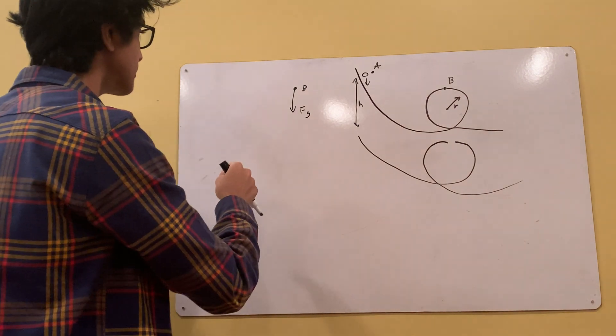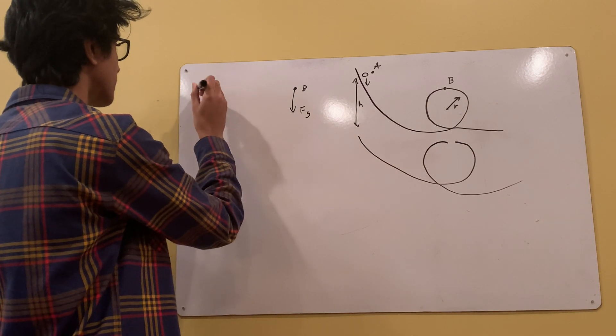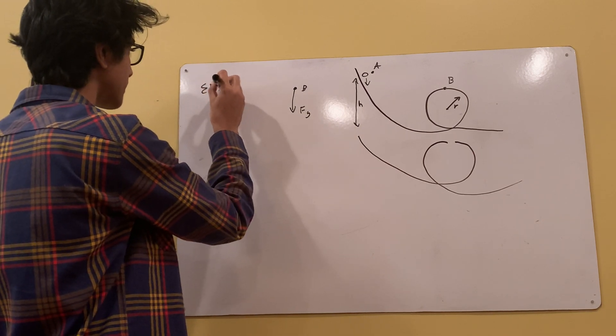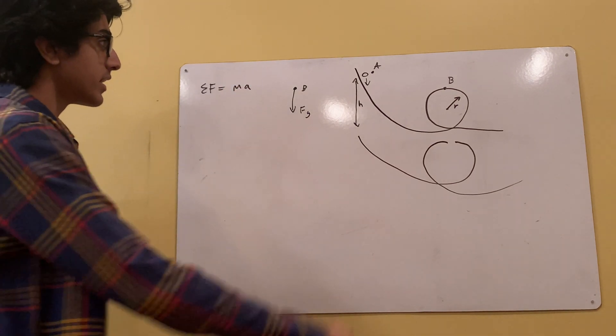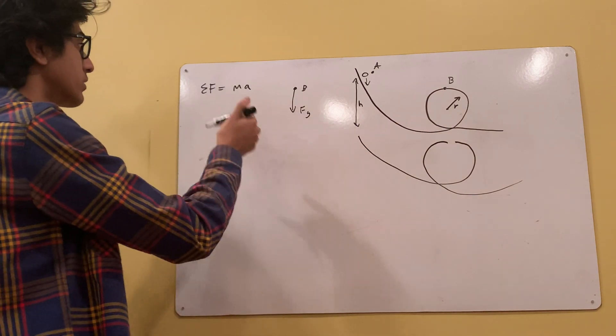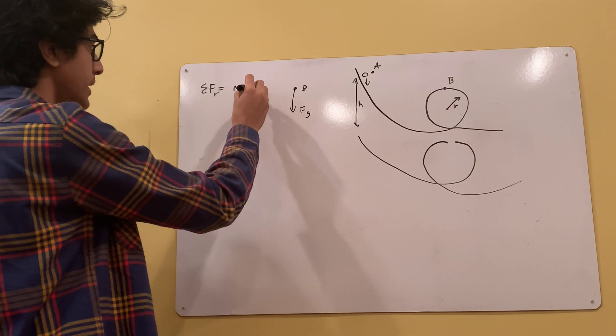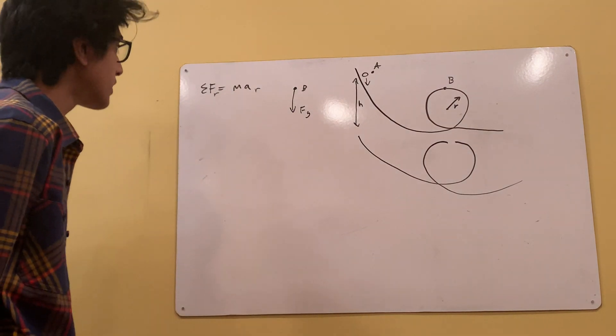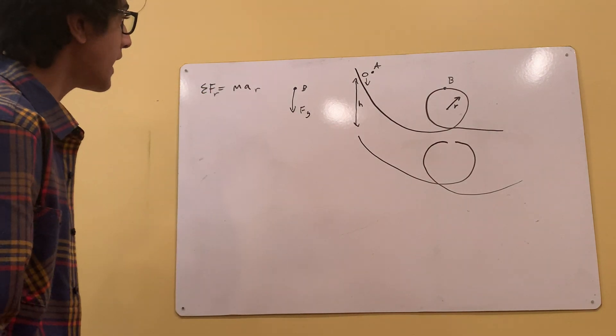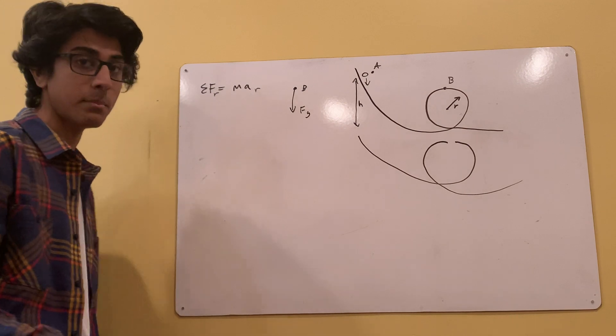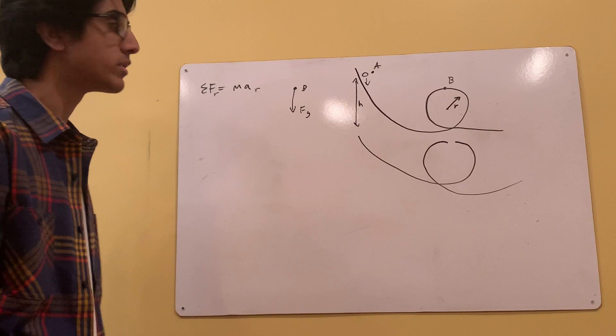So we have this Fg. So, let's sum the forces. Sum F is equal to Ma. And these are both in circular motion, and these are both in the radial direction. So we can put sum of the forces R, of Ma R. So what's our only force in this radial direction? It's Fg, and we know Fg is the mass times the acceleration of gravity, which is G. We're going to do everything in terms of variables because I like my variables.